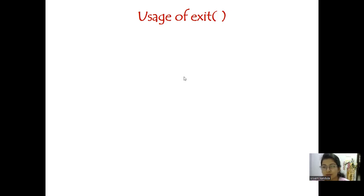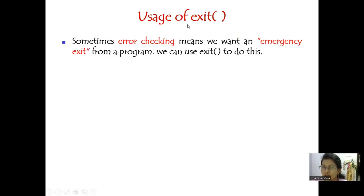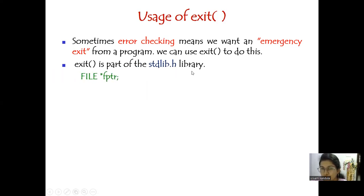Welcome back. In the last session we saw the usage of fopen and fclose. Now let's see the usage of exit — whenever you have an error in opening a file and need an emergency exit, we can make use of exit. This exit is part of the stdlib.h library, so you need to include that header. Let's see the syntax with the help of an example.